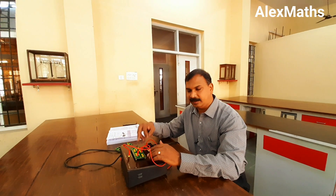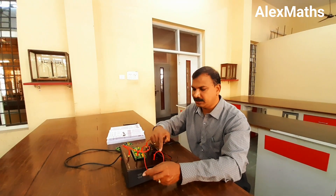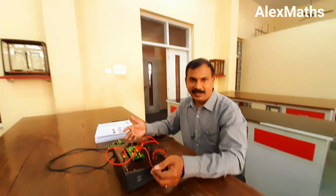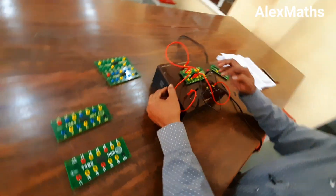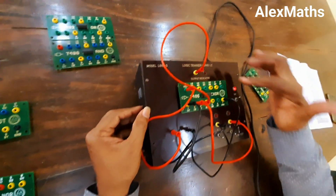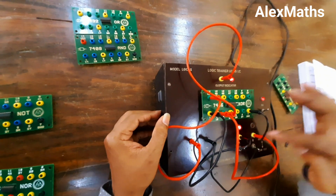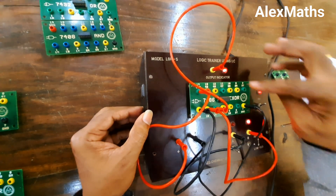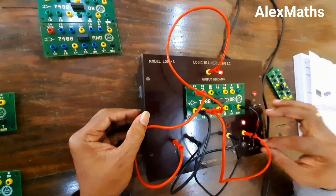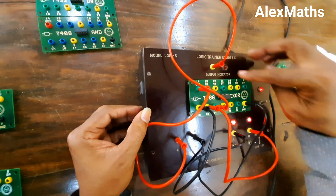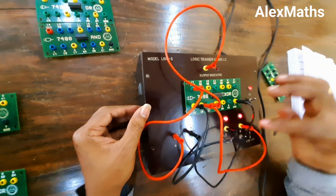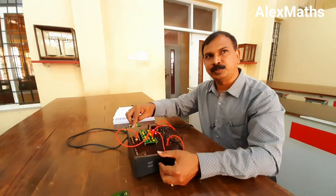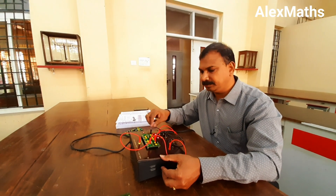Now the XOR gate is connected. Plus 5 V to pin 14, minus 5 V to pin 7. When A = 0, B = 0, output is 0. When A = 1, B = 0, output is 1. When A = 0, B = 1, output is 1. When A = 1 and B = 1, output is 0. When both inputs are in the same state, output is 0; when in different states, output is 1. That is all about XOR.